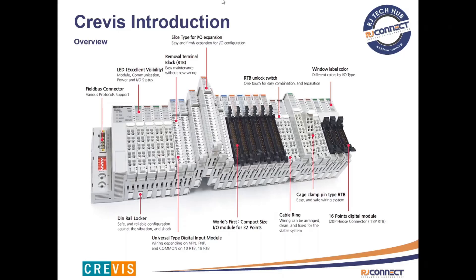As mentioned before, the removable terminal block makes it easy to maintain your I.O. system without the need to rewire everything. The removable terminal block also allows for easy installation of your wiring — just push the crimped end of your wire into the corresponding receptacle and you're good to go.